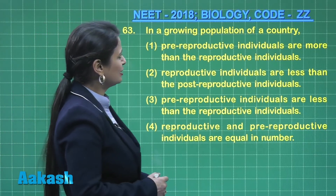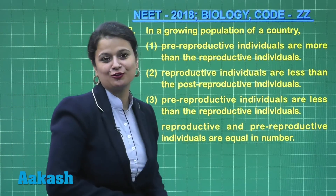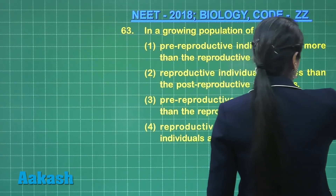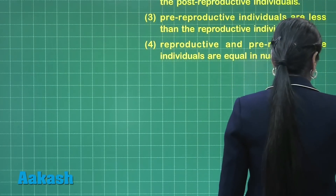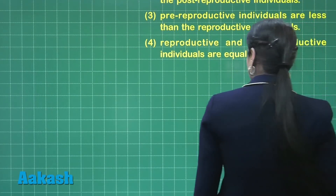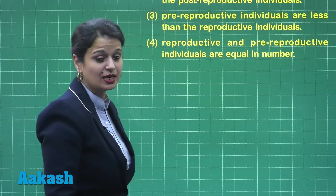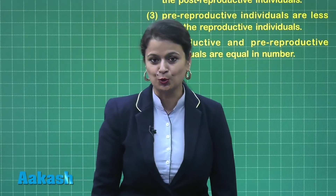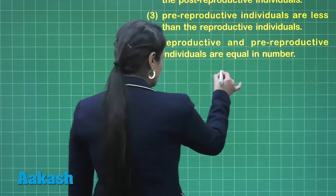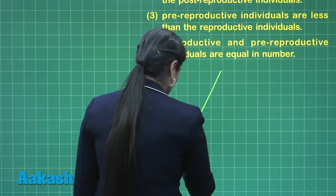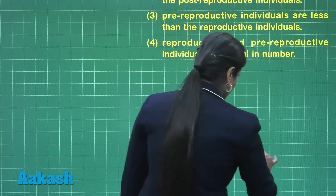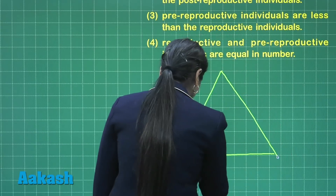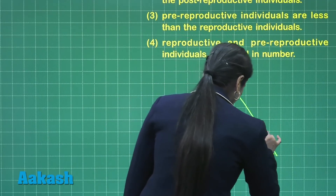Question number 63 says: in a growing population of a country. When it is a growing population, you can say it is an expanding population, which is shown by developing countries. The type of pyramid shown is a triangular shape, so let's make this triangular shape pyramid.